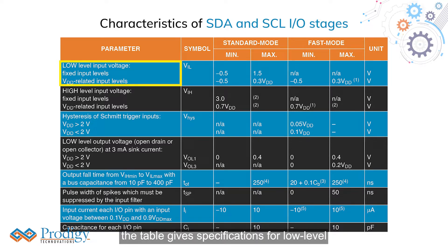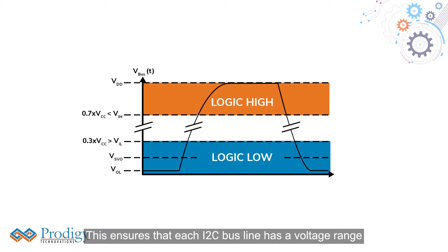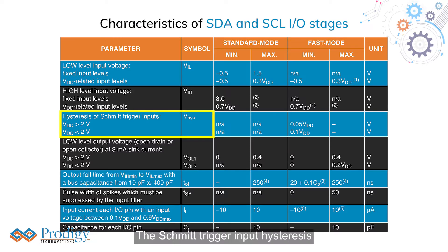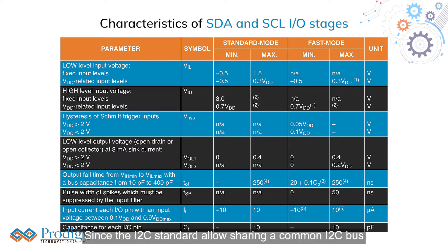The table gives specifications for low-level and high-level input and output voltages for SCL and SDA. This ensures that each I2C bus line has a voltage range that correctly transmits and receives high and low levels. The Schmidt trigger input hysteresis, HYS, helps in filtering out any spurious noise on the I2C bus and prevents input buffers from any false triggering.